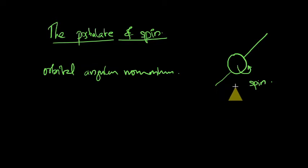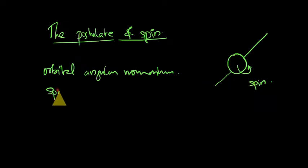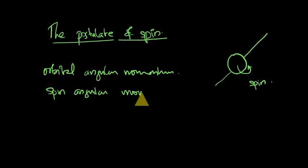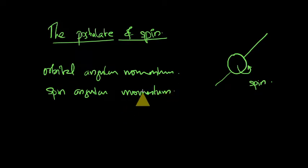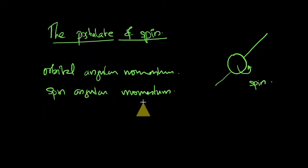You can suppose that the electron is also making a spin motion like this, or you can suppose the electron is rotating about its own axis. And if the electron is rotating about its own axis, it will produce the spin angular momentum. Goudsmit and Uhlenbeck in 1926 postulated that the electron possesses spin angular momentum.